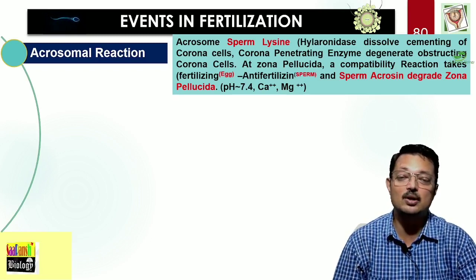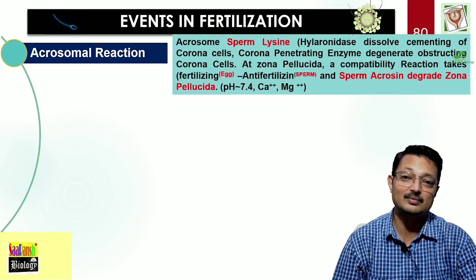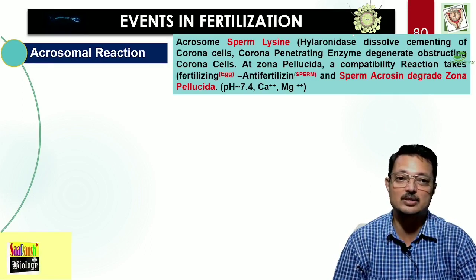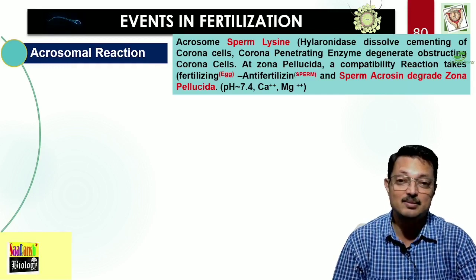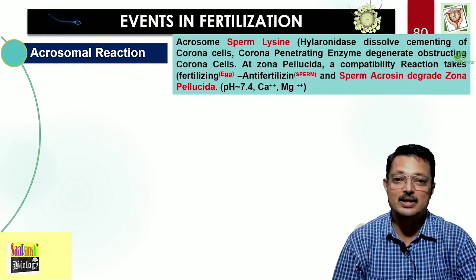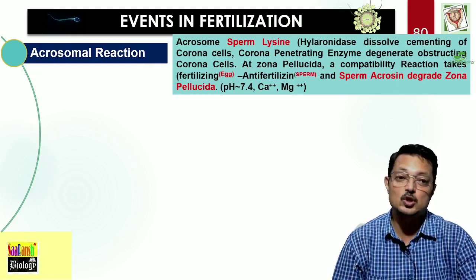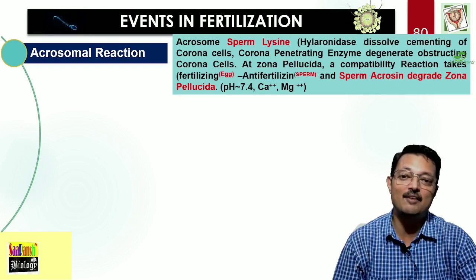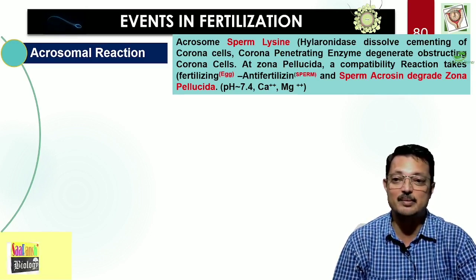At the zona pellucida level, a compatibility reaction takes place. There is a fertilizing protein on the egg membrane and an anti-fertilizing protein on the sperm membrane. Sperm acrosin degrades the zona pellucida only after this compatibility check. For this reaction, a pH of 7.4 and calcium or magnesium ions are needed. This ensures only compatible sperm can proceed.